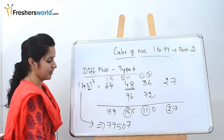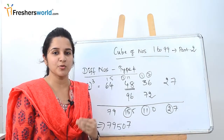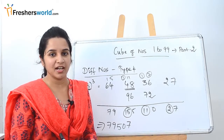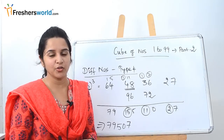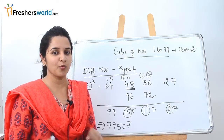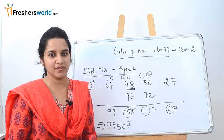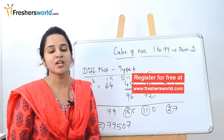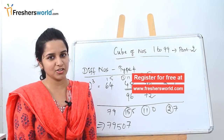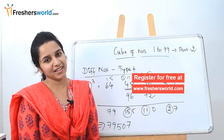The first time you solve all four types you might find it difficult, but once you get started it becomes very easy and you can solve cubes of numbers from 1 to 99 within seconds if you are thorough with all four types from part 1 and part 2. If you are looking for a job, kindly register at freshersworld.com. Like this video and subscribe to our channel. Thank you.